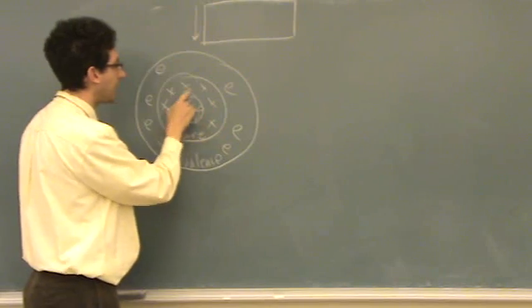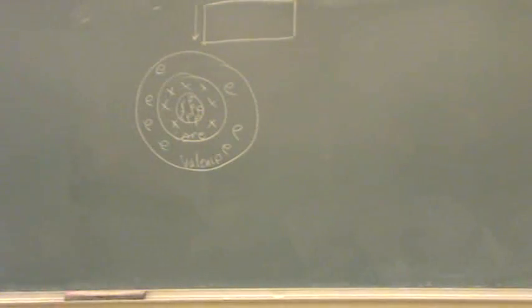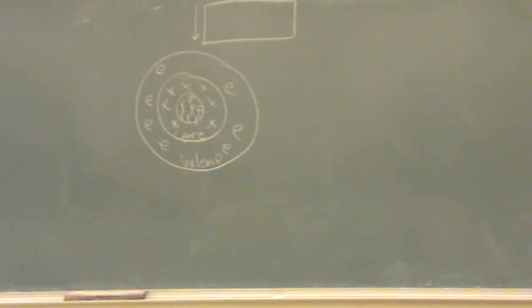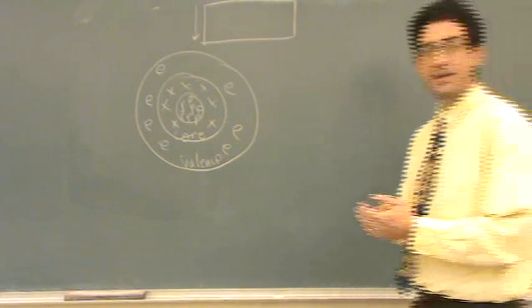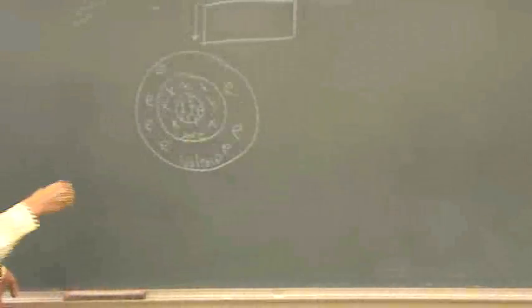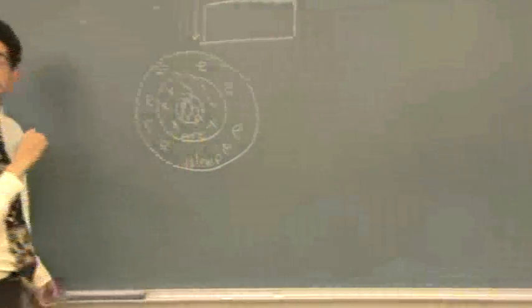Right now I have 1, 2, 3, 4. I have 7 protons, 7 electrons. I'm at, let me look at our periodic table. I'm at nitrogen right now. I put another one. Proton, electron, and carbon.